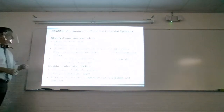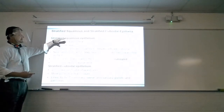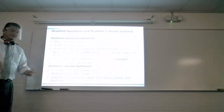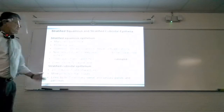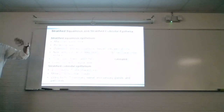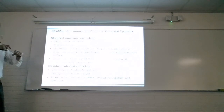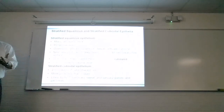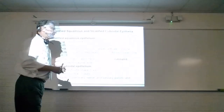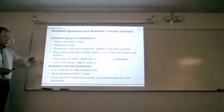Stratified squamous is several layers thick of flattened cells. We said this is the outer part of the skin — the epidermis, the outer layer of the integumentary system. We're going to talk a lot more about this in the next chapter.